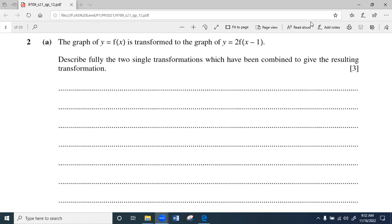According to question, the graph of y equals f(x) is transformed in this form: y equals 2f(x minus 1). Now you can see two changes in this one, that's why he said describe fully the two single transformations which have been combined to give the resulting transformation. So let's start to solve this problem.